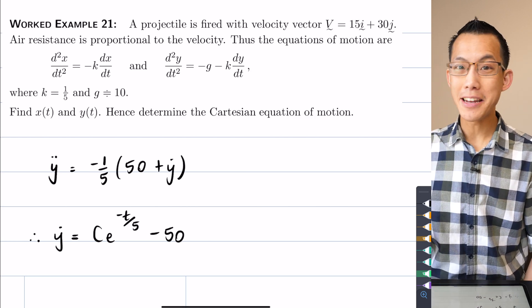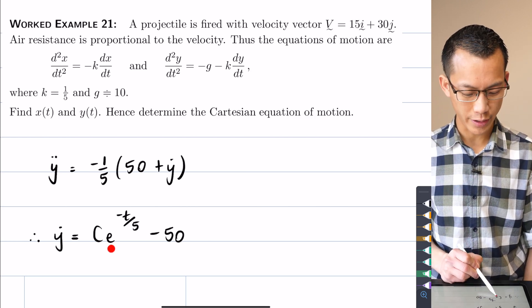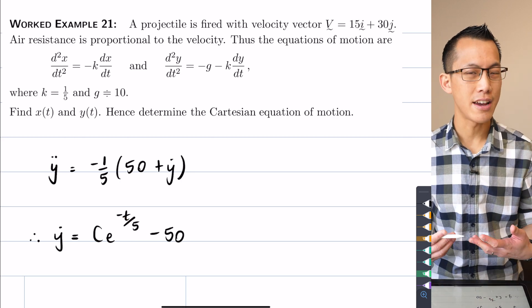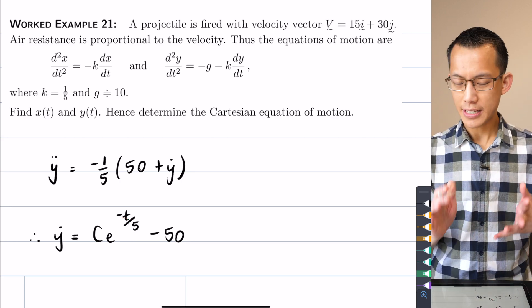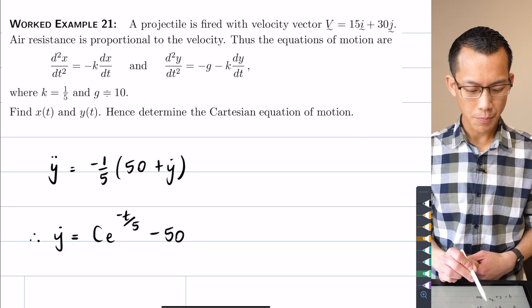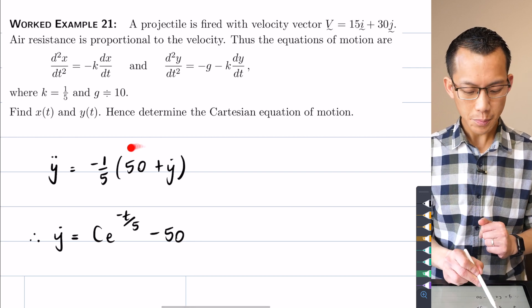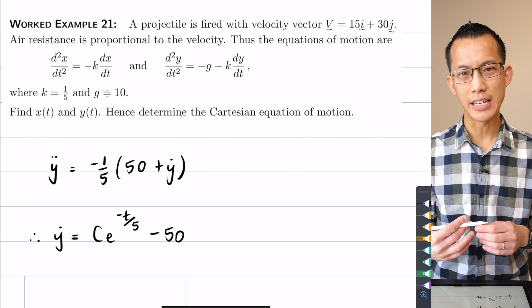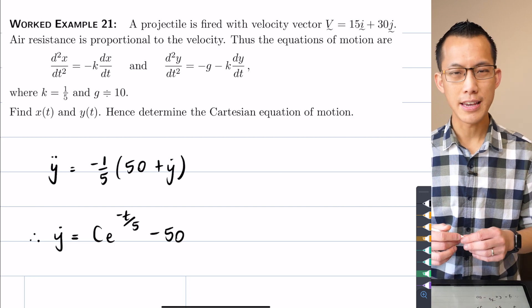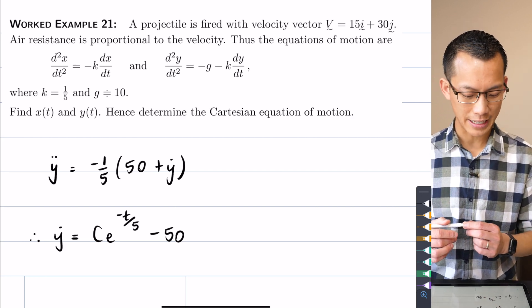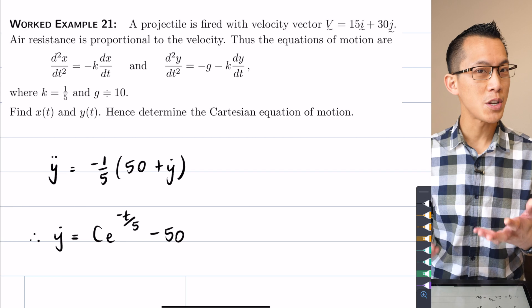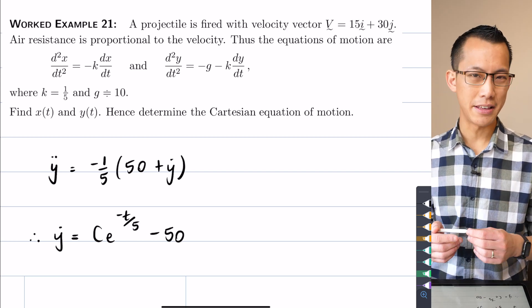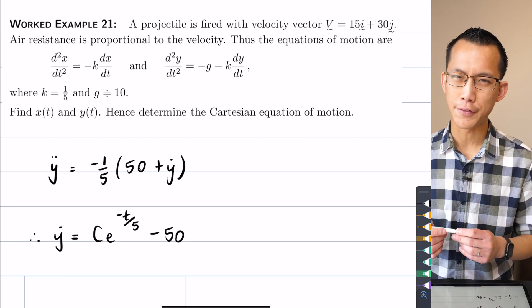It's exponential decay just like before because you've got this exponential, and that negative sign indicates decay rather than growth. But the difference compared to horizontal motion is that this 50 in here introduces essentially a shift into our exponential decay situation. We're not moving towards zero anymore — we're going to be changed by this offset of 50 units.